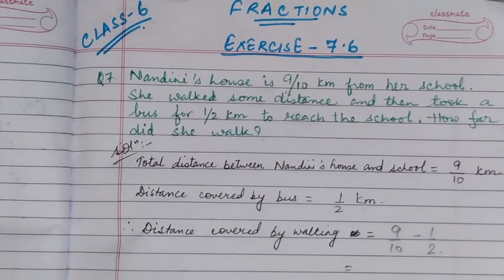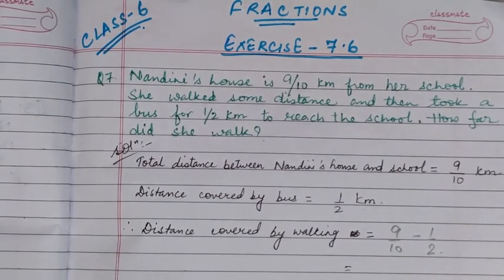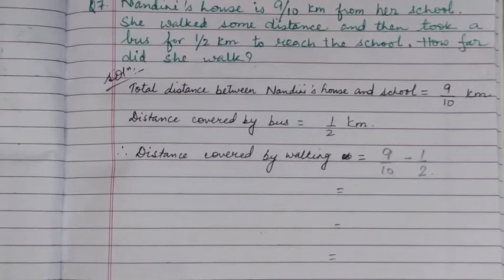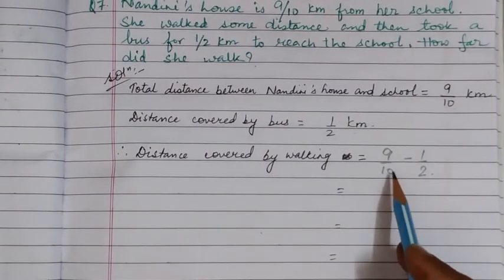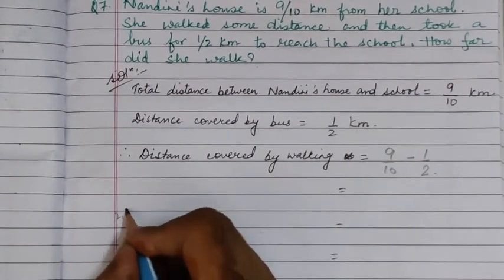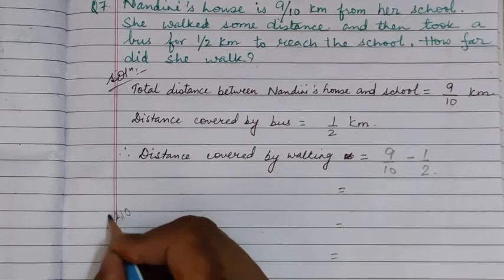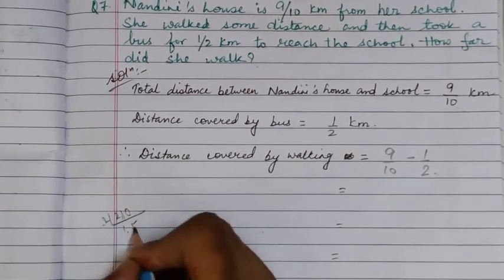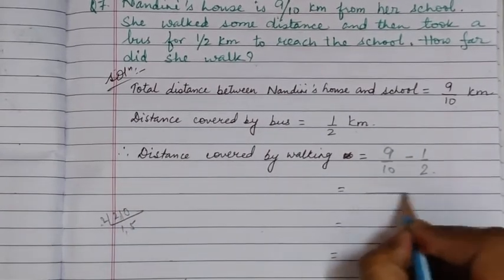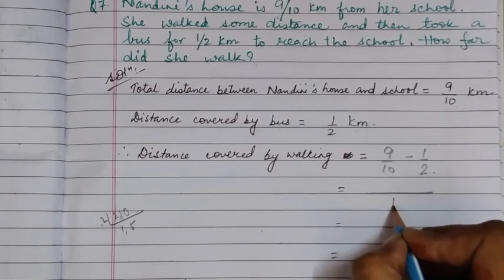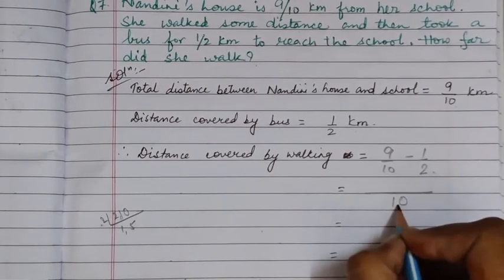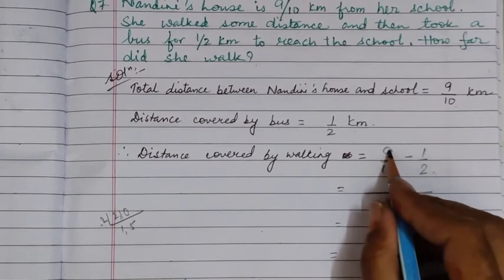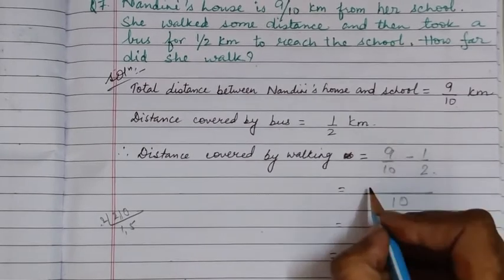Now we have to find the difference between these two fractions. First of all we will take the LCM of 10 and 2, which is 10. So in the denominator we will write 10. Now 10 ones are 10, so we have to multiply 9 with 1.